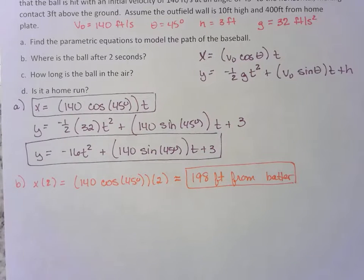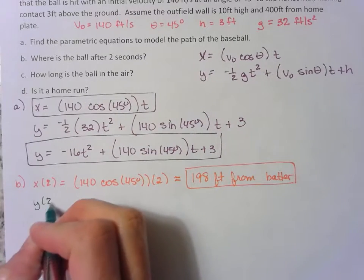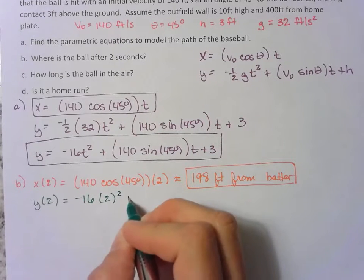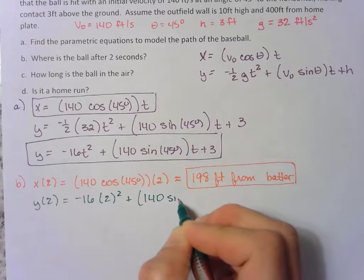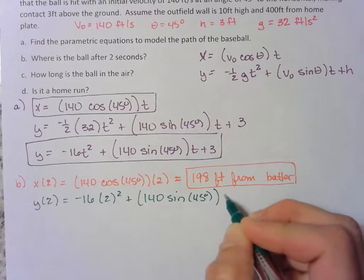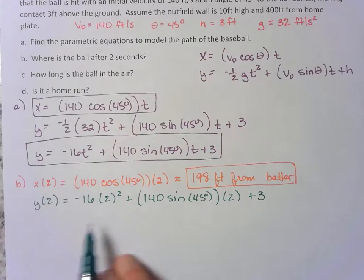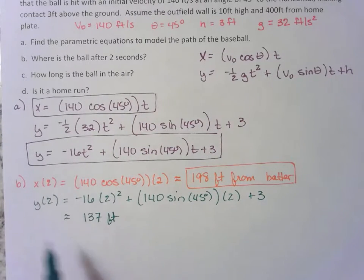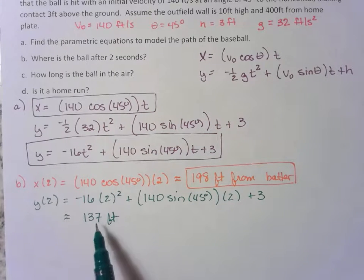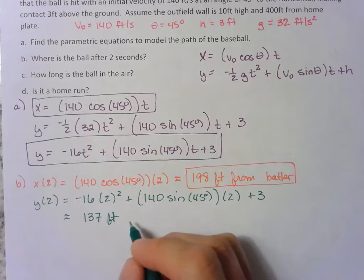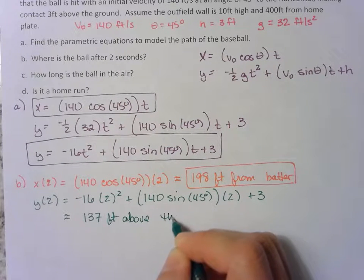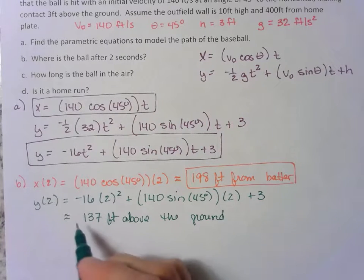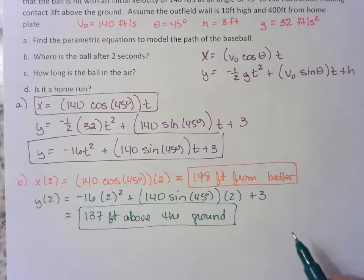But we can also find out how high it is in the air because that would be our y function. So y of 2 would be negative 16 times 2 squared plus 140 sine of 45 degrees times 2 plus 3. Type all of this into your calculator. You get approximately 137 feet. Now y, remember the y-axis is vertical. So this is the vertical height. It's 137 feet above the ground. In this case, our horizontal is the ground.